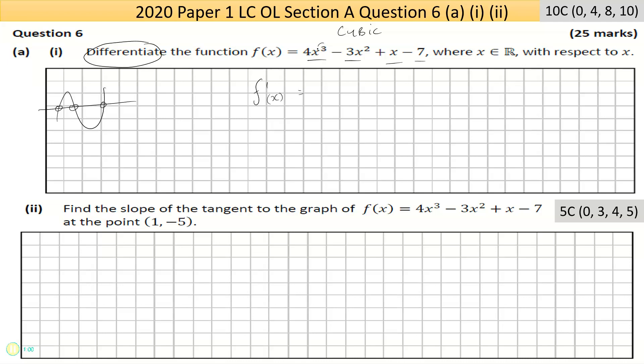There's four terms here. I can apply the power rule to each one. The power rule says multiply the power by the number in front, so 3 × 4 is 12. Step two of the power rule is take one from the power, so x³ take away one is x². That's the first term differentiated. The second term: again, power by number in front, 2 × 3 is 6, minus, take one from the power, 2 - 1 is 1.